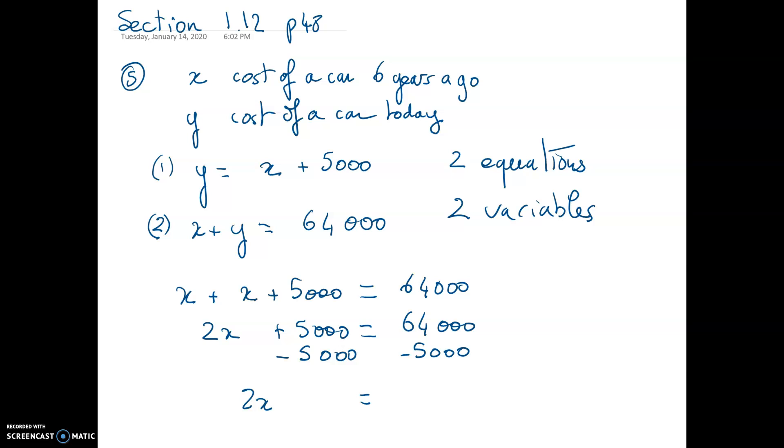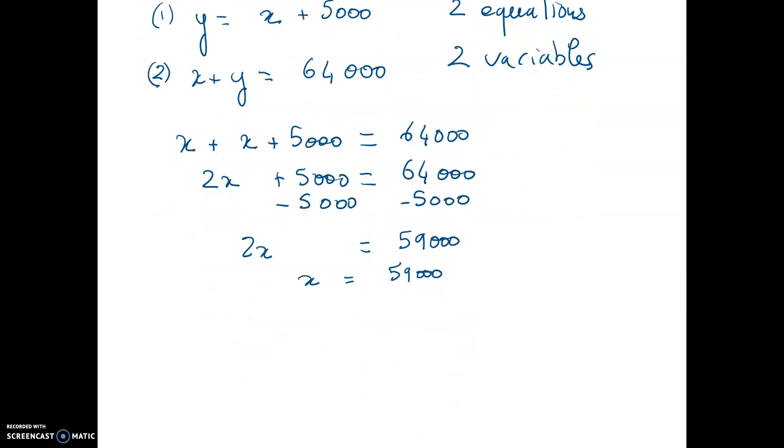2x equals $59,000, so x equals $59,000 divided by 2 because I must divide by 2 both sides of my equation. So x equals $29,500 and so y equals $29,500 plus $5,000. So the car today compared to the car six years ago cost $34,500.